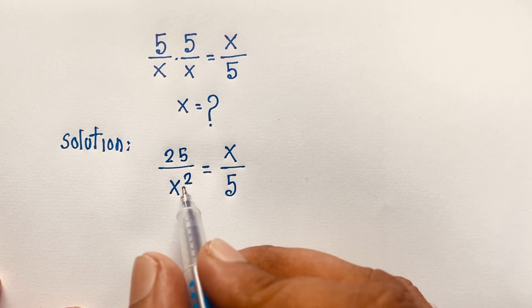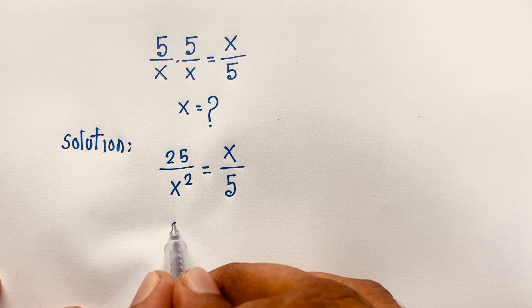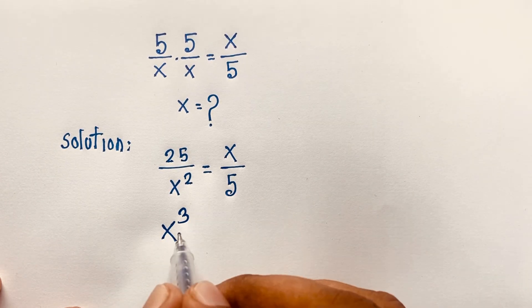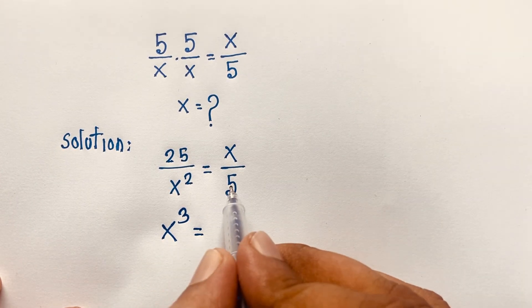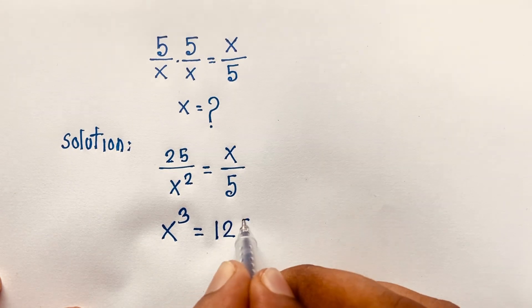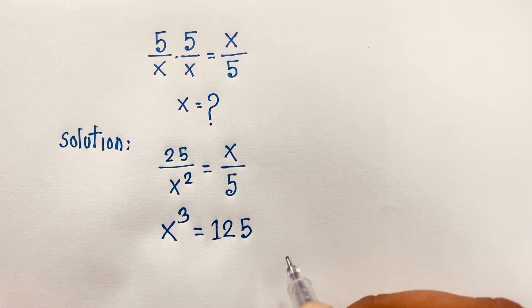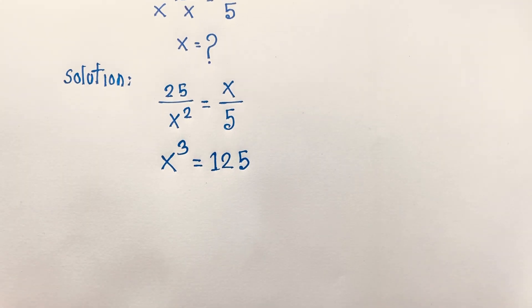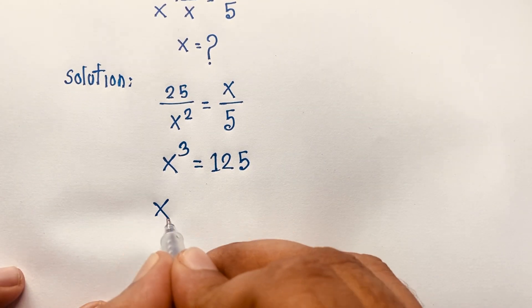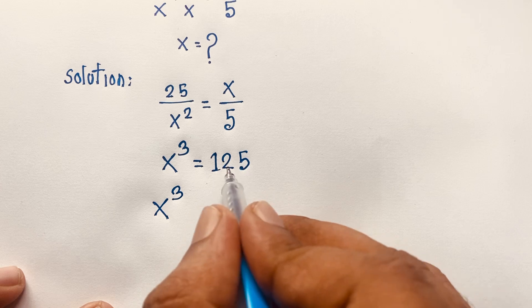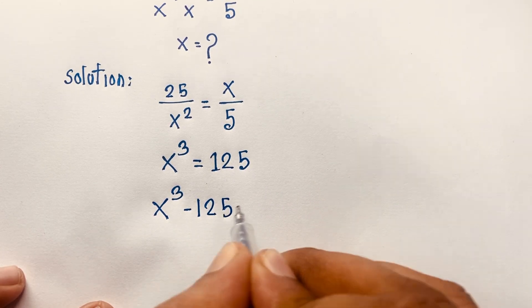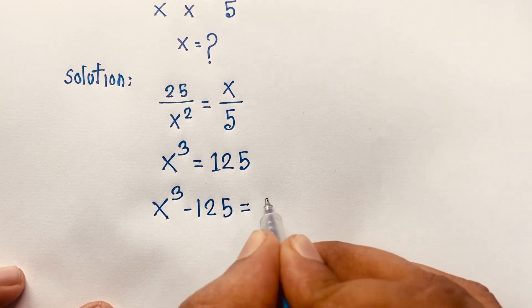So we get x to the power 3 equals 125. Moving 125 to the other side, it becomes negative 125, so x to the power 3 minus 125 is equal to 0.